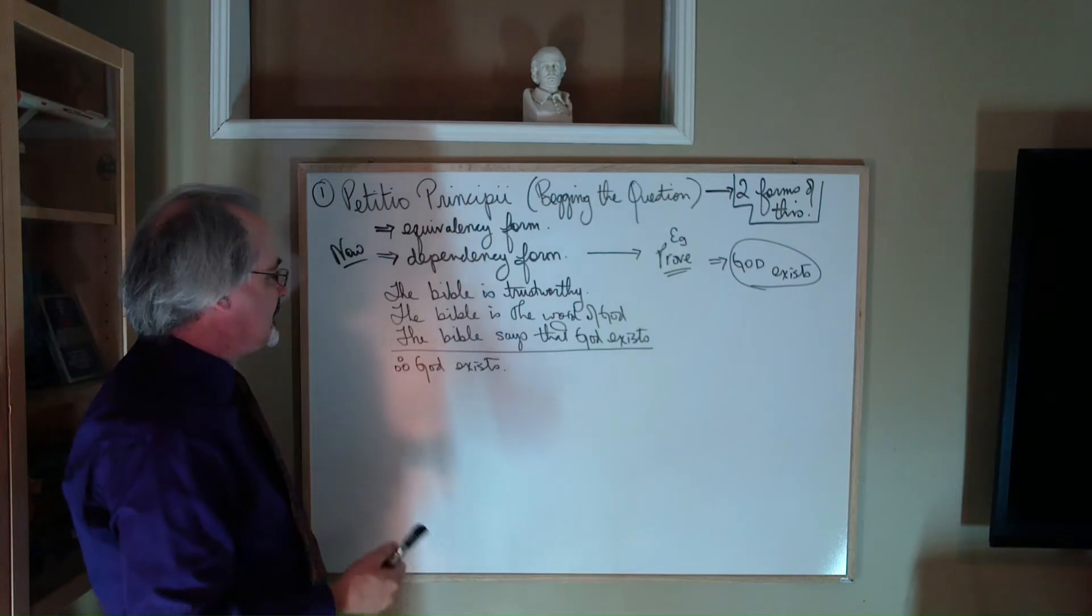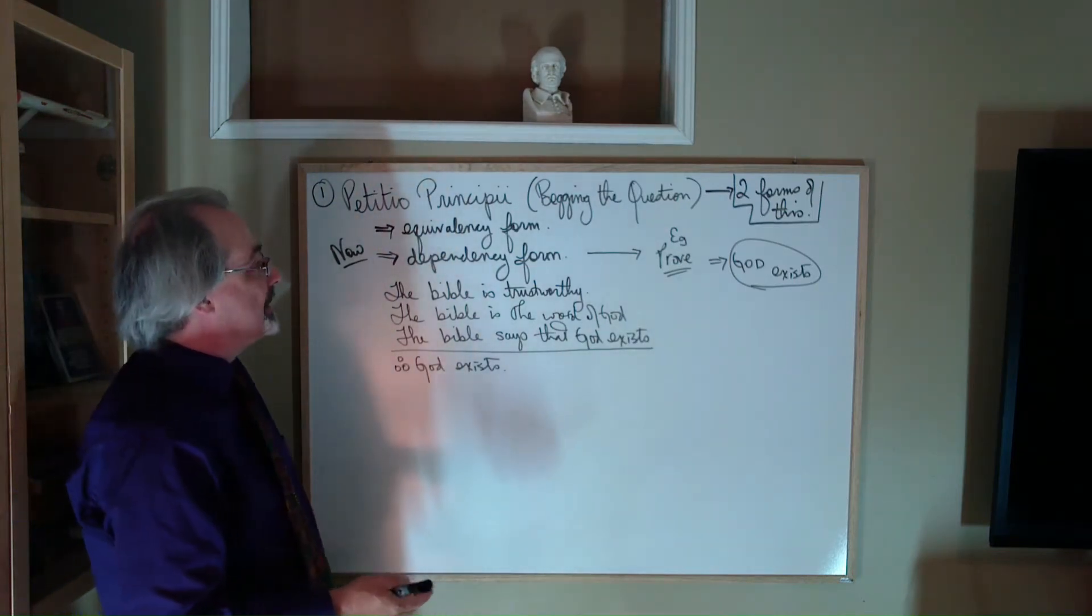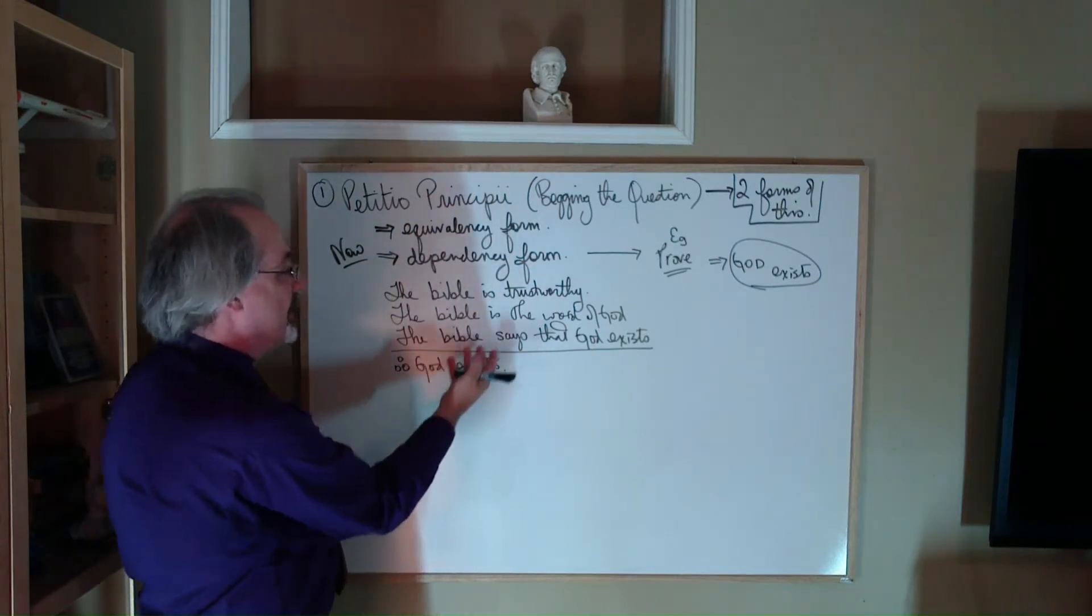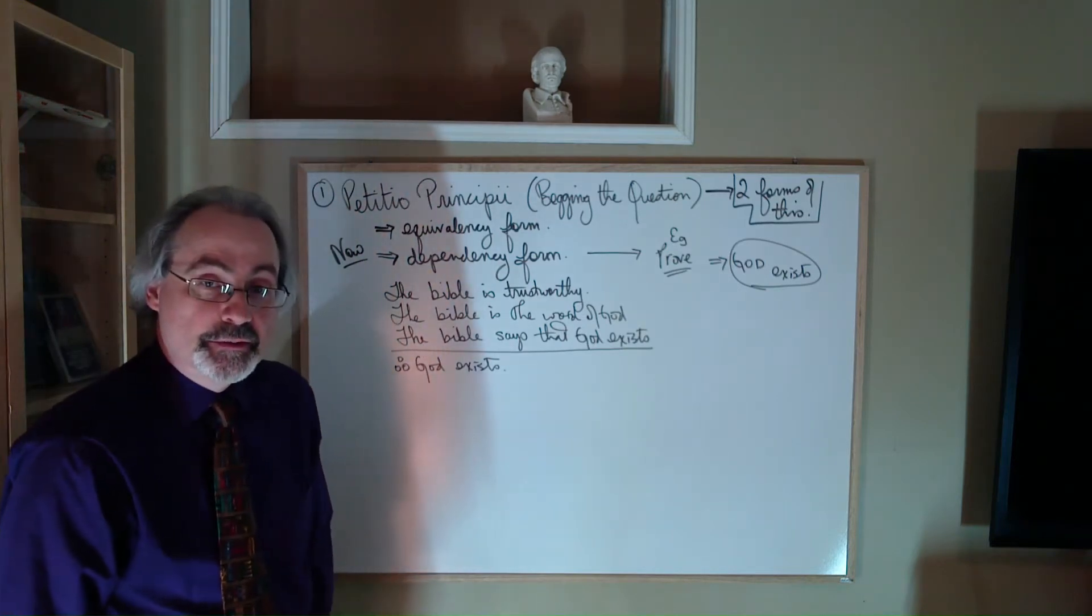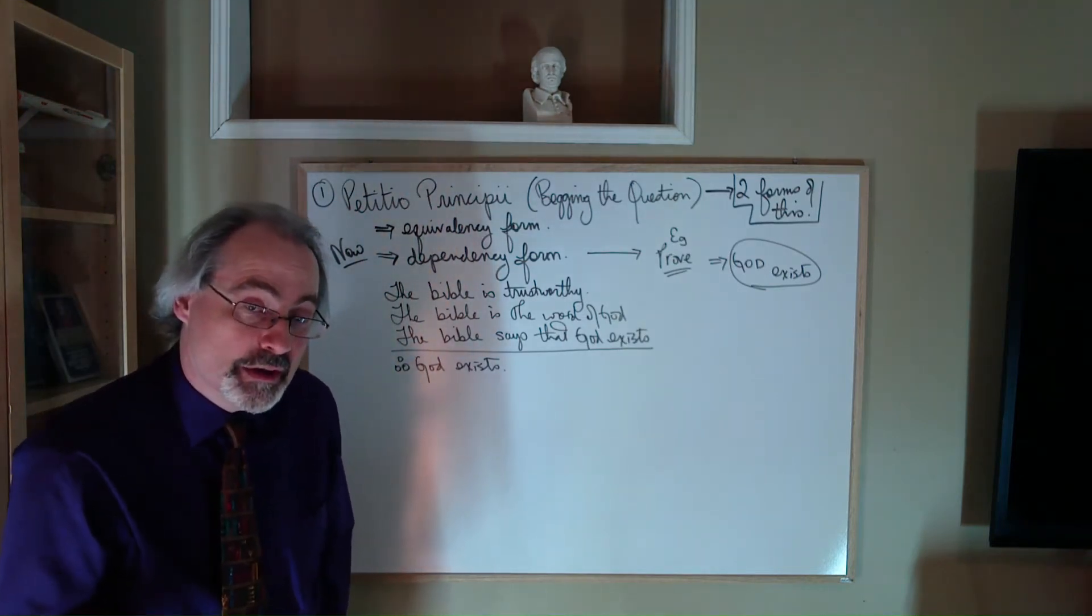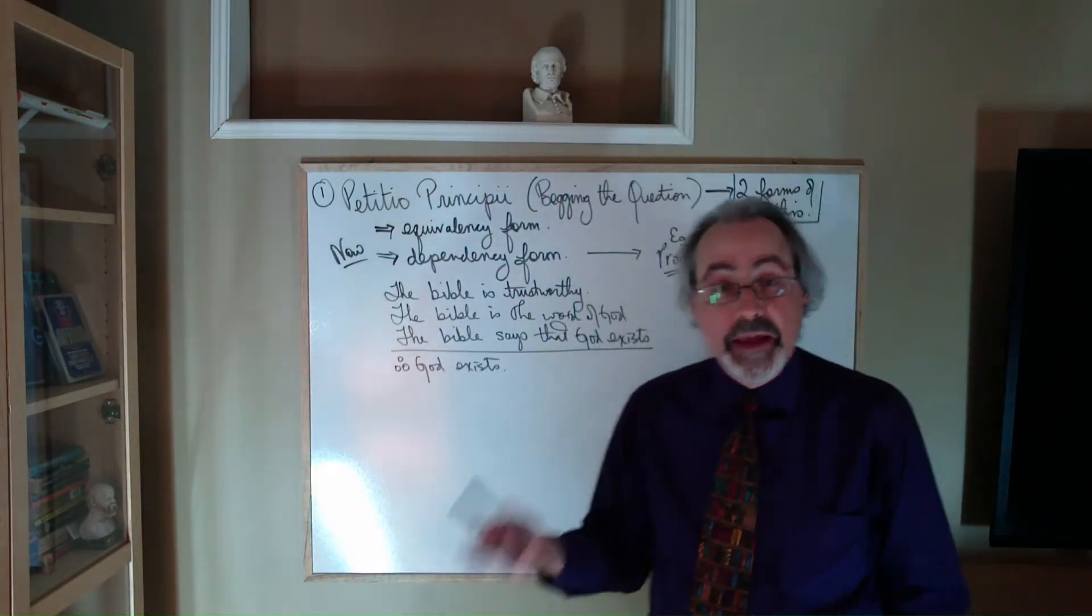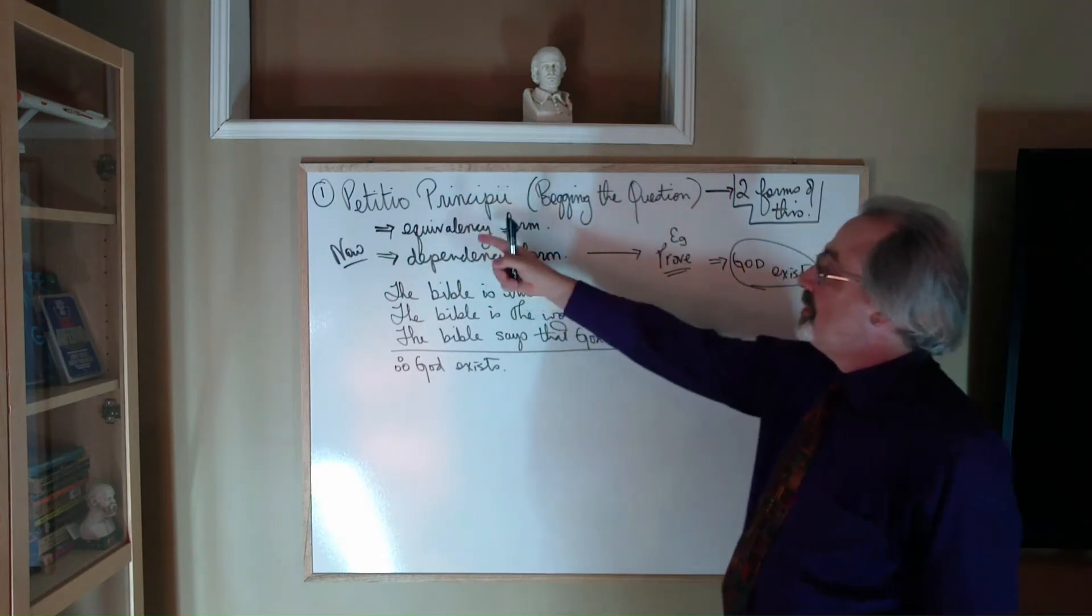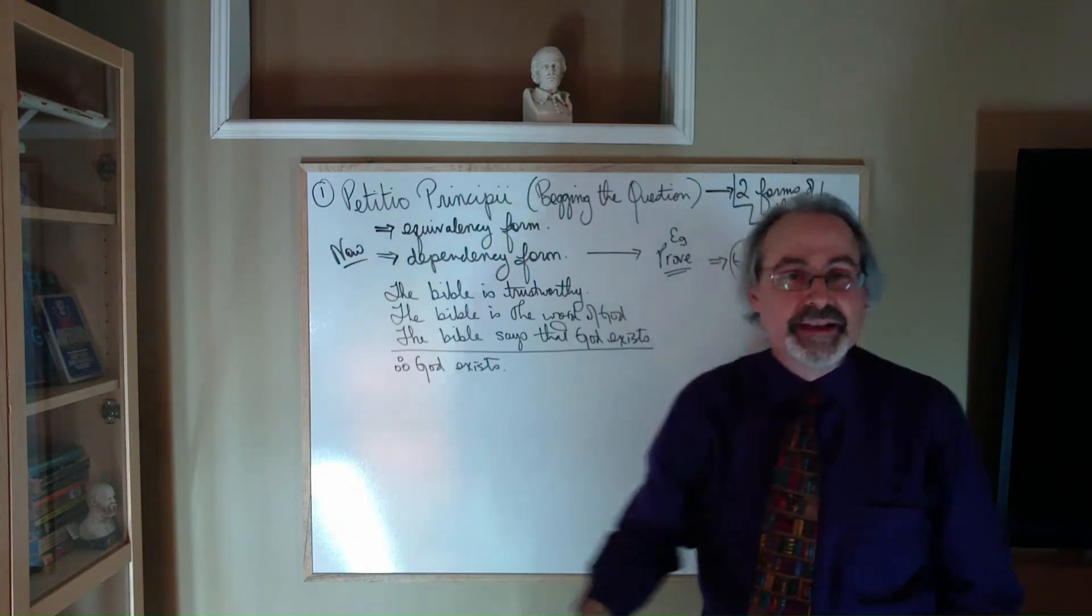Now, it's not really the case that any of these are strictly just an equivalency, because this isn't simply a reformulation of anything in the premises. But yet it is still regarded as a fallacy in the dependency version. Sometimes people will call this petitio principii, begging the question, or circular reasoning.